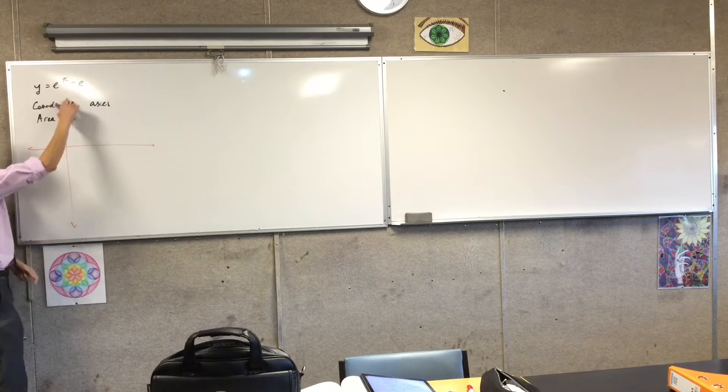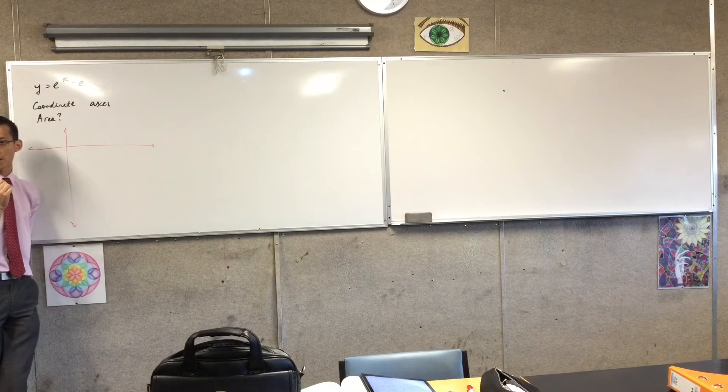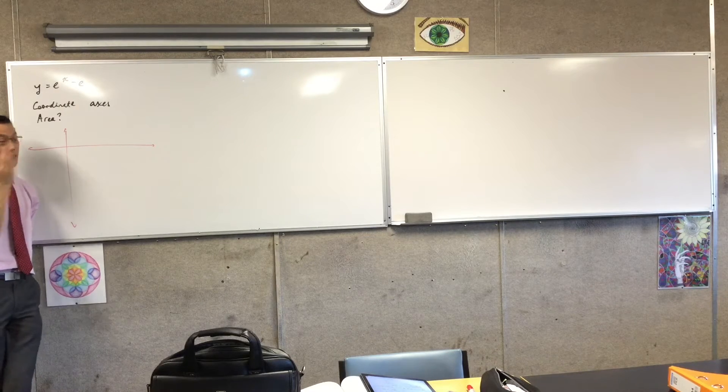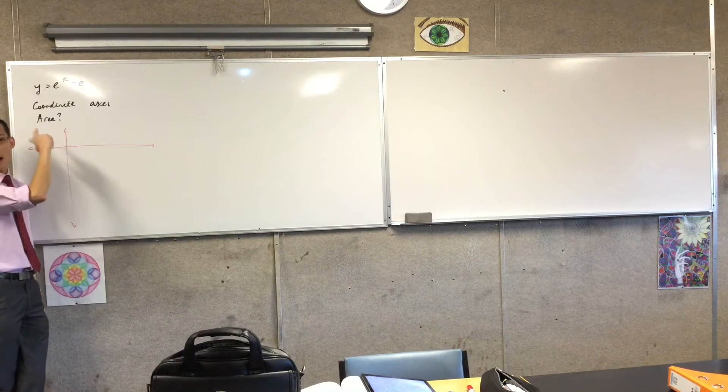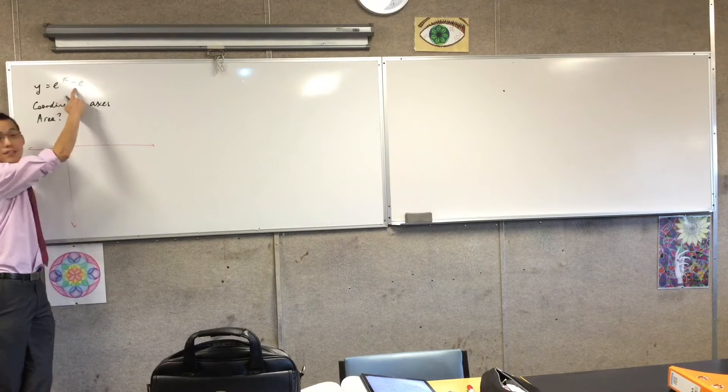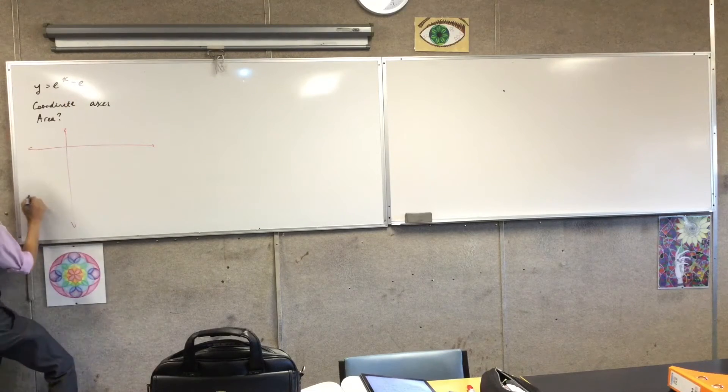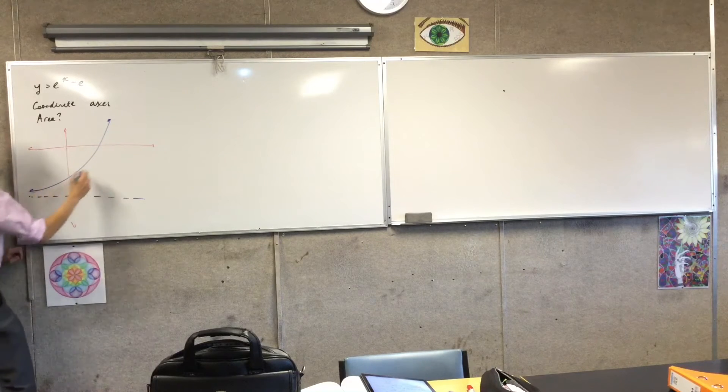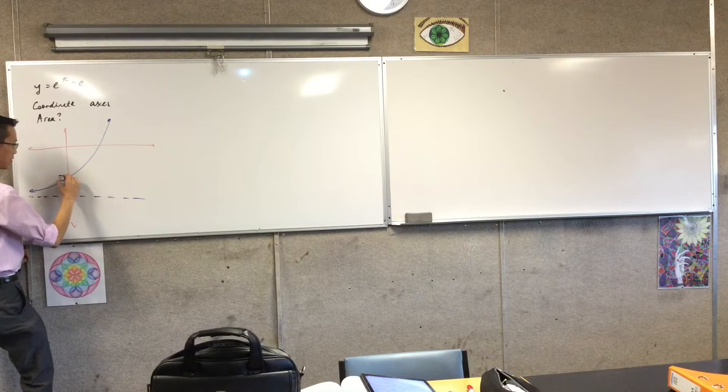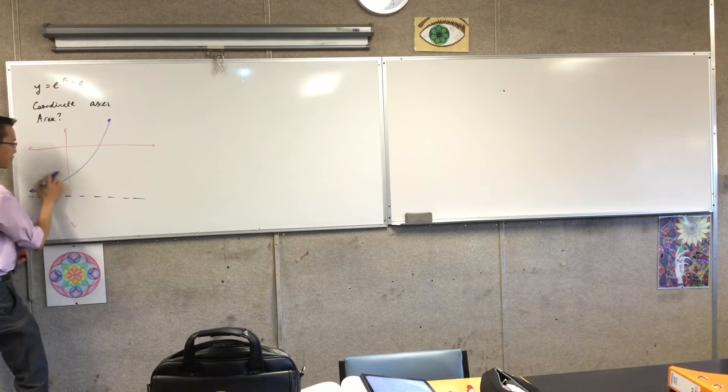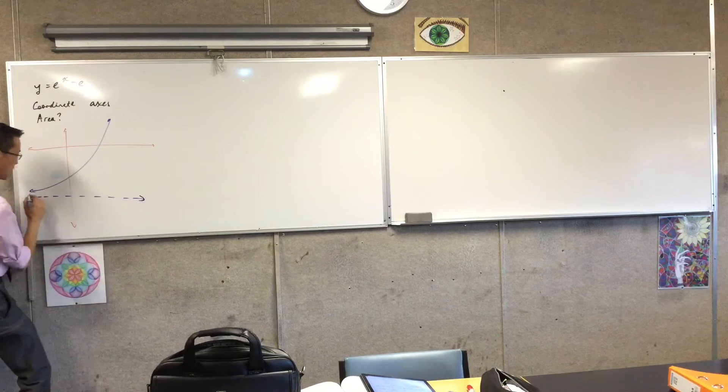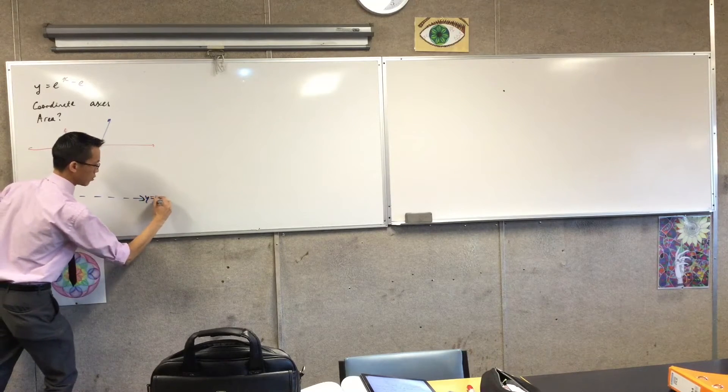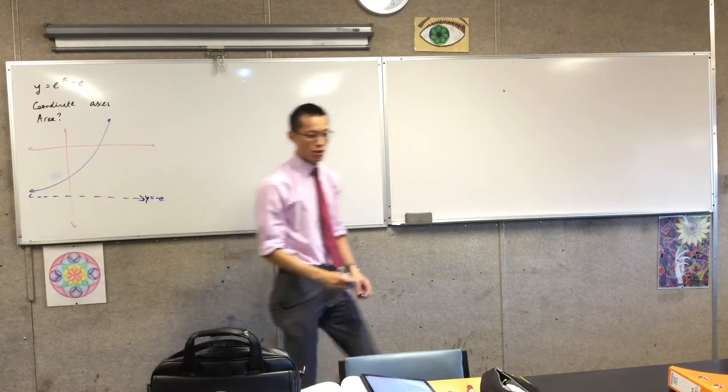Because e to the x usually has a horizontal asymptote at y equals 0, this will have a horizontal asymptote at y equals negative e. Very good. So I'm going to pop that in. Now I've got my y equals negative e. Okay, so that looks good.